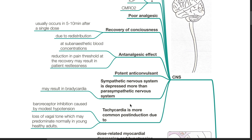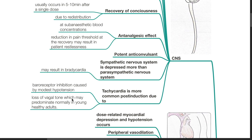The sympathetic nervous system is depressed more than the parasympathetic nervous system, and this may result in bradycardia. However, tachycardia is more common after induction as baroreceptor inhibition is caused by modest hypotension and loss of vagal tone, which may predominate normally in young healthy adults. Cardiovascular system: there is dose-related myocardial depression and hypotension. Peripheral vessel dilation occurs. Tachycardia or bradycardia can occur.